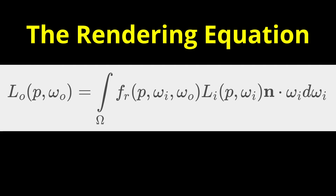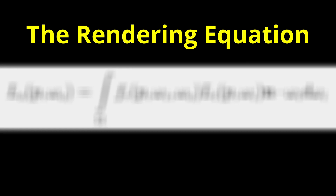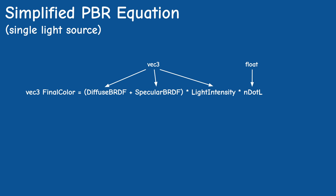In most of the texts I've seen, the discussion begins with an overview of the general rendering equation, but I'm going to skip it entirely today and go directly to the implementation, because we're going to simplify it in a number of ways which makes the original equation less relevant. If you want to get into graphics research you can find it in many resources online. So let's take a look at our version of the PBR rendering equation, which shows the calculation for a single light source. I will talk about multiple light sources later in this video.